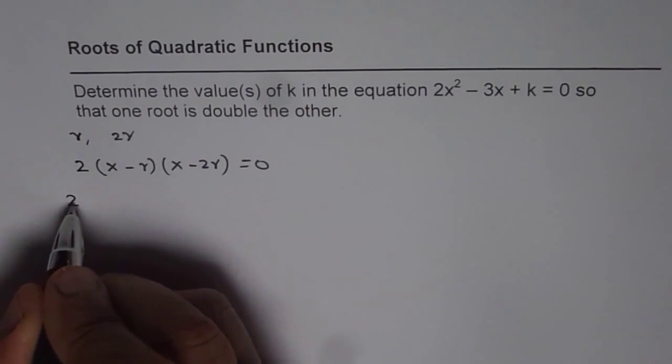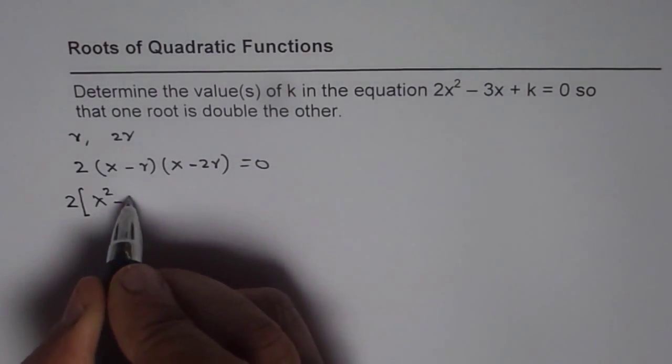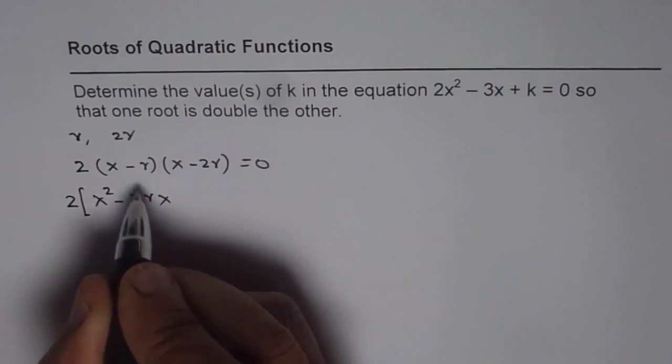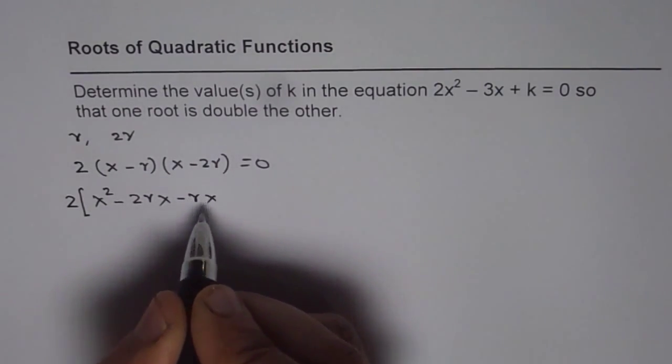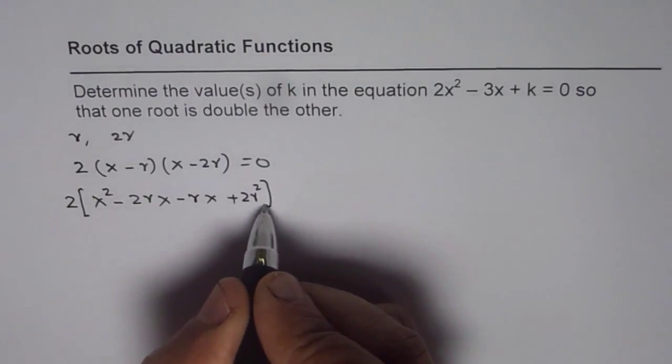Now, let us expand. So, we get x times x is x squared and we get minus 2rx and this will give minus rx and then plus 2r squared equals to 0.